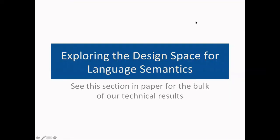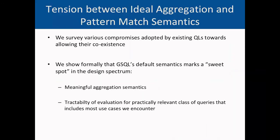We point you to the paper for a survey of the design space for graph query language semantics — this section contains the bulk of our technical results. In it, we highlight the clashing requirements between the ideal aggregation and the ideal pattern matching semantics, and we survey the various compromises adopted by existing query languages in order to allow these two key language ingredients to coexist. We show formally that GSQL's default semantics marks a sweet spot in the design spectrum, leading to both meaningful aggregation semantics and tractability of query evaluation for a practically relevant class of queries that covers most use cases we encounter.